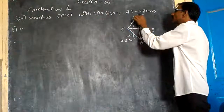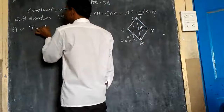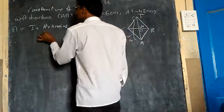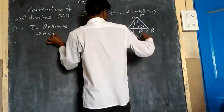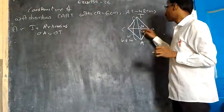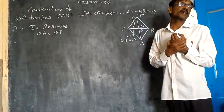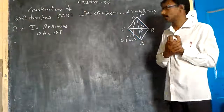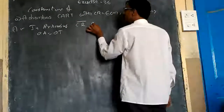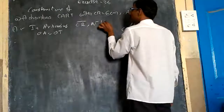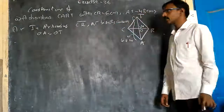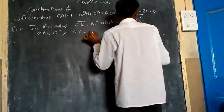O-A is equal to O-T. In a Rhombus, O-A is equal to O-T. Why? Because the diagonals bisect each other. So you can write down here: C-R and A-T bisect each other. Therefore, O-A is equal to O-T. At the same time, O-C is equal to O-R. This is very, very important.